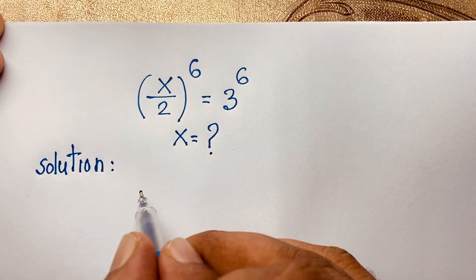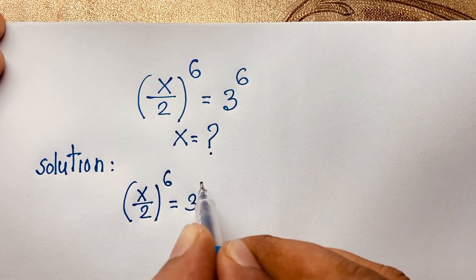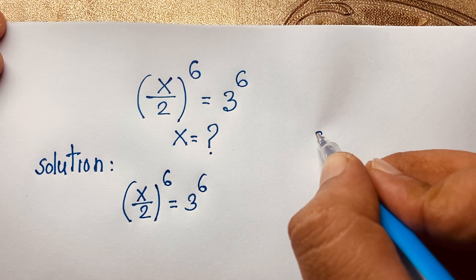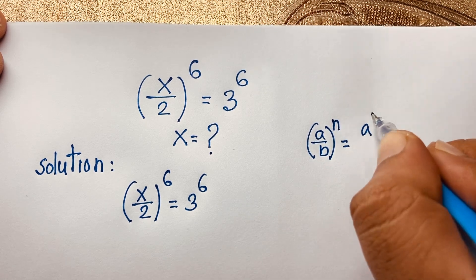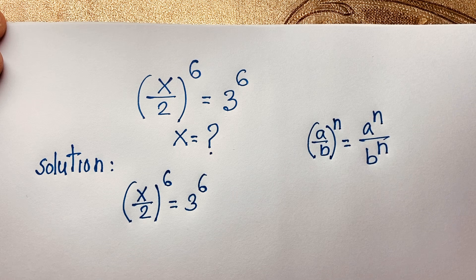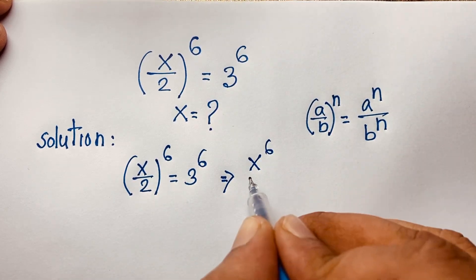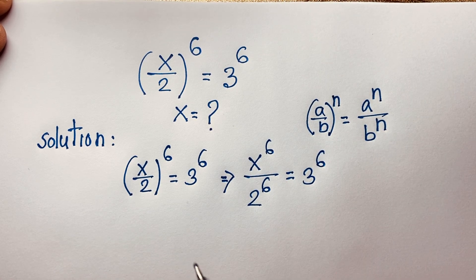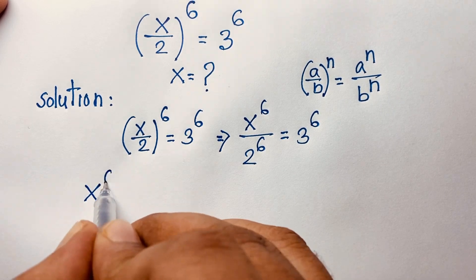Our question is (x/2)^6 = 3^6. Now we can see here that (a/b)^n, if I apply this exponential law, it equals a^n / b^n. According to this formula, I rewrite the expression as x^6 / 2^6 = 3^6, where n = 6.